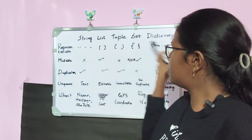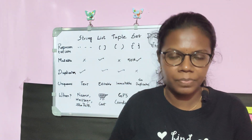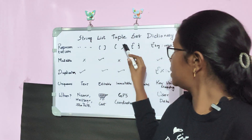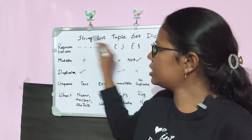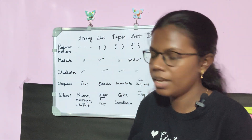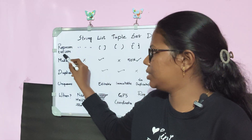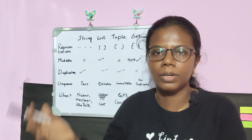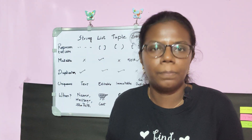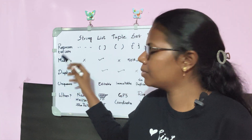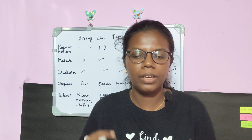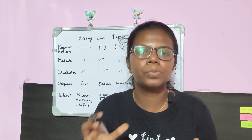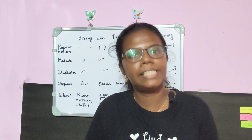So these are the five data types we are going to see: string, list, tuple, set, and dictionary. We are going to see how they are represented — maybe within double quotes, maybe within brackets. Next, if that data type is mutable or immutable. In Python, we call a specific data type mutable if I can make any changes to it, and if I can't make any changes, it is called immutable.